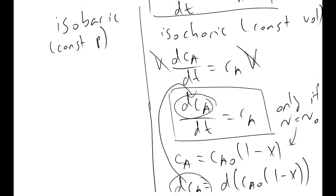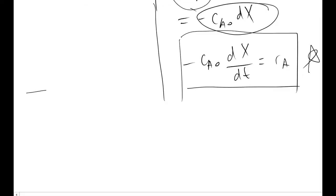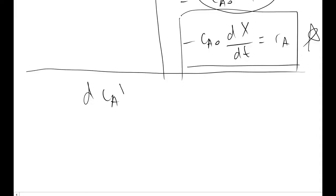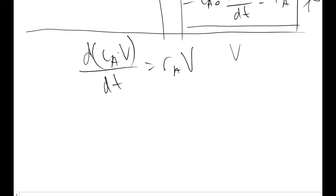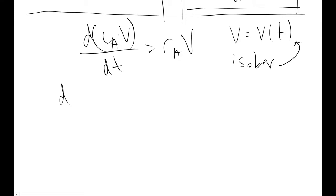In the case of when we are working with isobaric BSTRs, things get a little bit trickier, but we end up using the product rule. And so in the case, going back to this equation here, d(CAV)/dt must be equal to rAV, because your volume is now a function of time, because it is an isobar. We have to use the product rule. So performing the product rule on this tells us that CA times dV/dt plus V times dCA/dt must be equal to rAV.